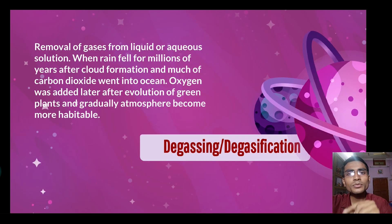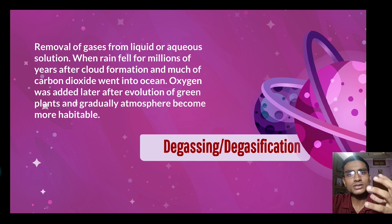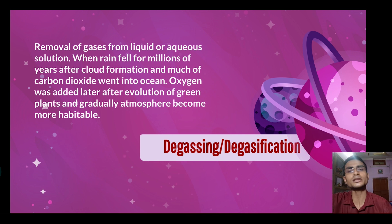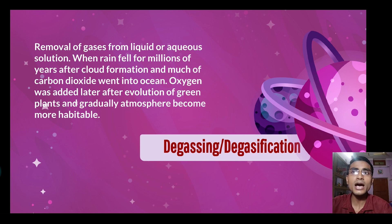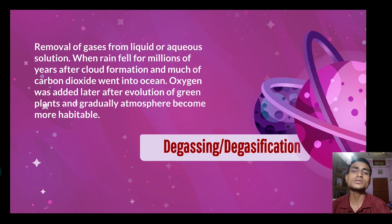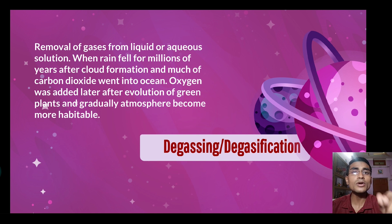A very important keyword is degassing or degasification. When gases are removed from any liquid or aqueous solution, we call it degasification. When Earth was born, the same happened — through degasification many gases came out. Then there was a lot of rain, cloud formation occurred, carbon dioxide went into the ocean, and then oxygen came because of the evolution of green plants and habitats. This is how Earth's atmosphere became habitable.